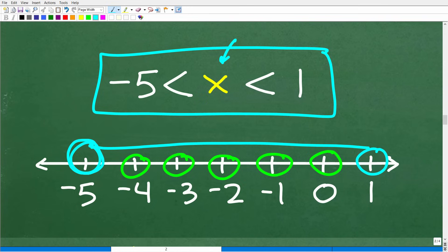If we think about all the values between negative 5 and positive 1, we have negative 5. If I was to graph this, and if x was just any number, the actual graph would be a circle here or a parenthesis like this, and then a line going all the way over to 1.